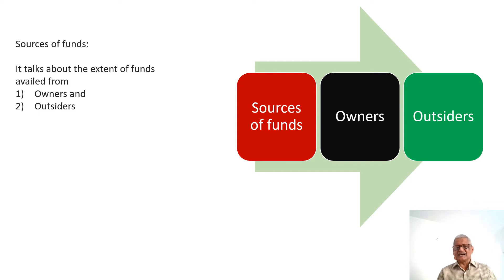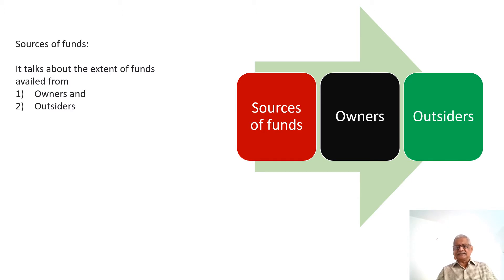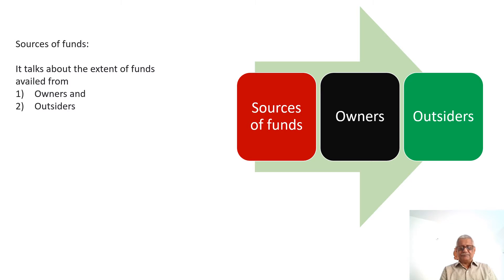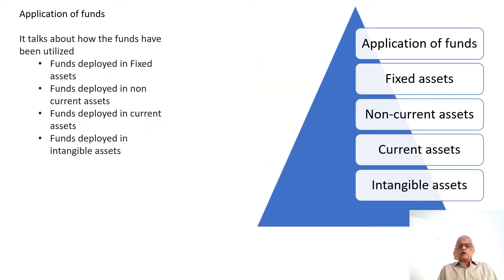The sources of funds are classified into funds brought in by the owners and outsiders. Outsiders are again divided into two: current liability and term liability. Current liability is what is to be paid to outsiders within 12 months; term liability is what is to be paid beyond 12 months. Application of funds refers to how funds are utilized — in fixed assets, non-current assets, current assets, or intangible assets.